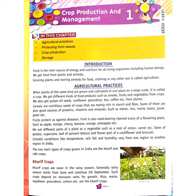Kharif crops depend on the rainy season for their growth. Examples of Kharif crops include rice, maize, soybean, groundnuts, and cotton.